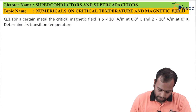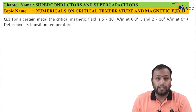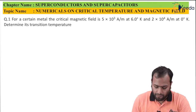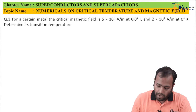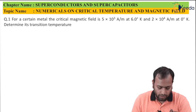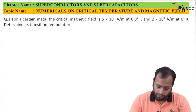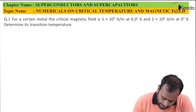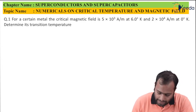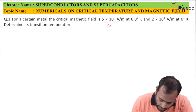The first question says: for a certain material, the critical magnetic field is 5×10³ ampere per meter at 6 Kelvin, and 2×10⁴ ampere per meter at 0 Kelvin, and we have to determine its transition temperature. Let's note the given details and the formula. The critical magnetic field at 6 Kelvin is Hc(T), where T equals 6.